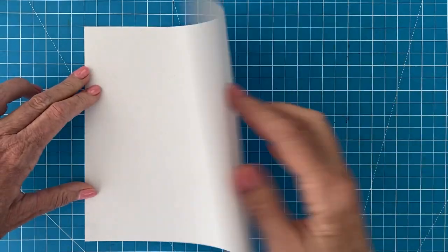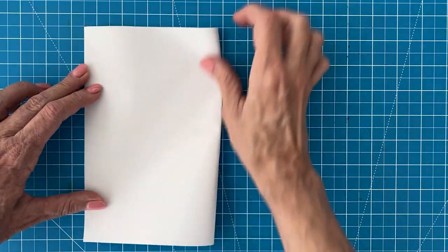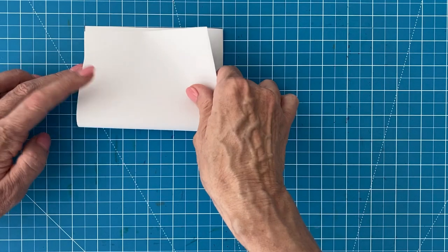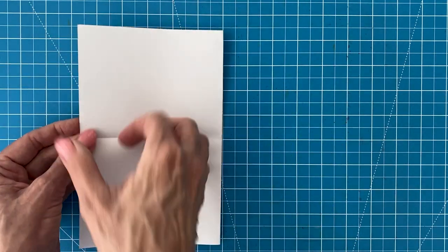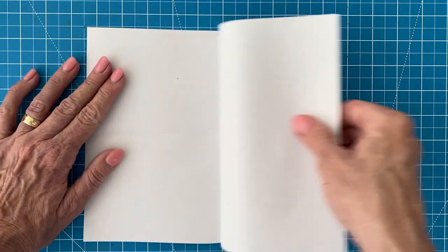Before you begin your drawing though, it helps to make some guidelines on your paper. By folding and creasing your paper in half in both directions, you'll have guidelines that match my tutorial, which really help as you draw each step.